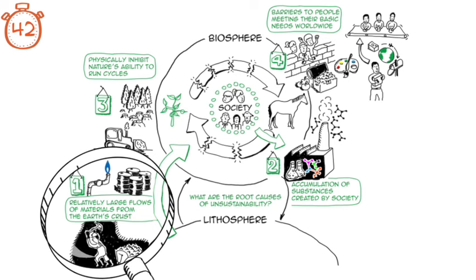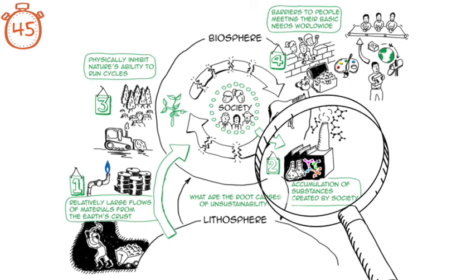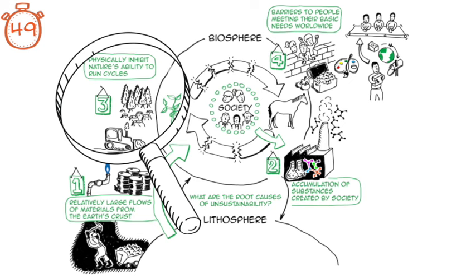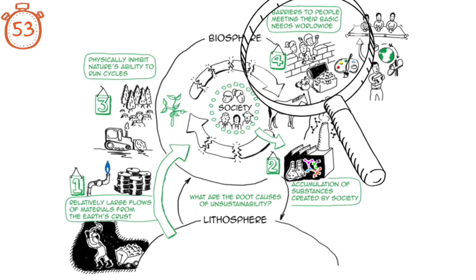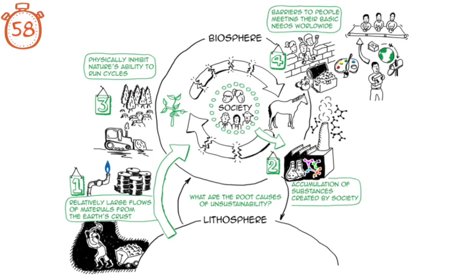We extract large flows of materials from the Earth's crust. We create an accumulation of substances produced by society. We physically inhibit nature's ability to run its cycles. And we create barriers to people meeting their basic needs worldwide. The first three speak to the environment, while the fourth one is more social.